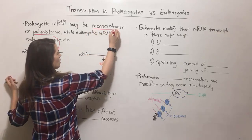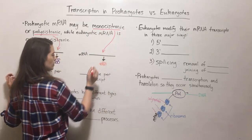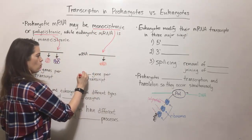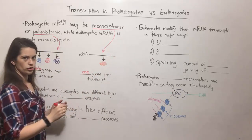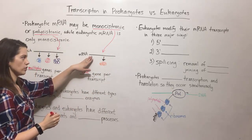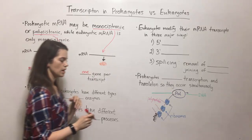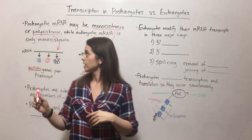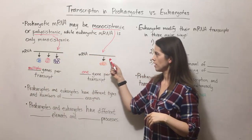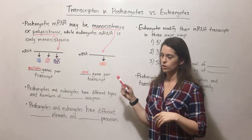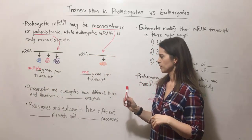Monocistronic, on the other hand, is where you've just got one gene per transcript, so each transcript results in one protein. Prokaryotes can do either monocistronic or polycystronic, while eukaryotes are only monocistronic.